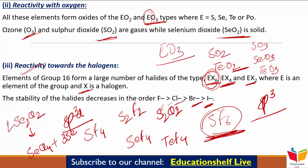तो ये थे हमारे general characteristics। मैं hope करता हूँ कि ये वाला part आपको समझ में आ गया होगा। Next part में, जैसे हमने Group 15 के सारे elements और उनके compounds पढ़े थे, उसी तरीके से हम इसमें भी Oxygen, Sulfur इन सब के बारे में detail में बात करेंगे।